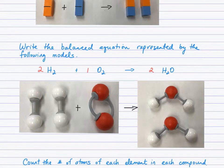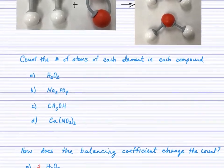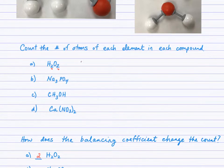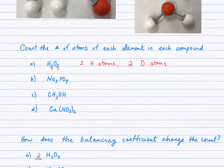Hopefully you came up with: two hydrogen particles plus 1 O2 produces 2 H2O. You can see the pictures here. Another important skill for balancing equations is being able to count the number of atoms of each element in the formulas and compounds as provided. We look at the subscripts — for example, here there are two hydrogen atoms and two oxygen atoms. Go ahead and count the number of atoms of each element in each compound for B, C, and D, then check back.